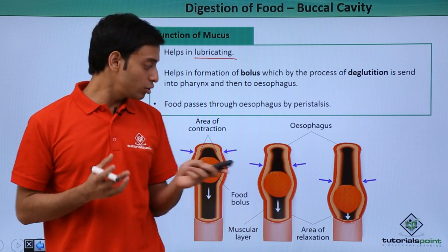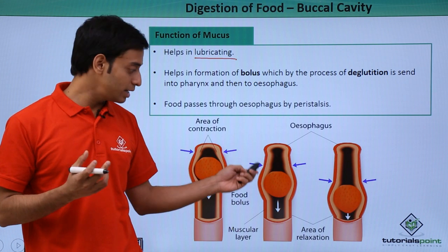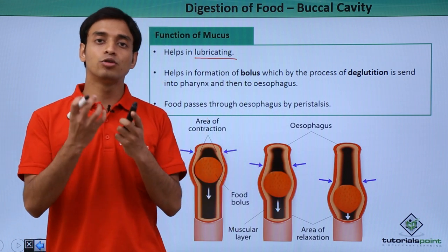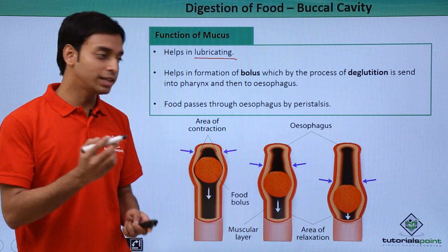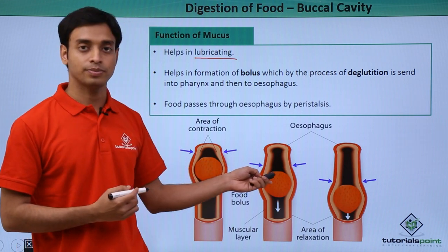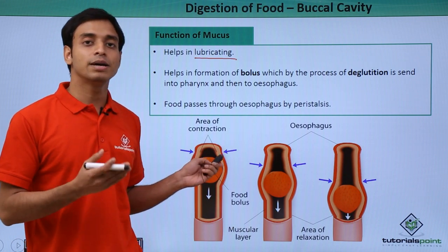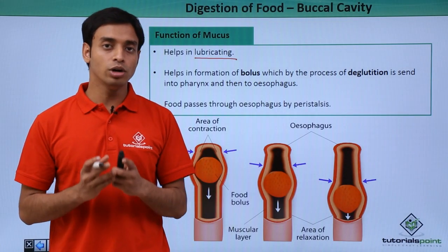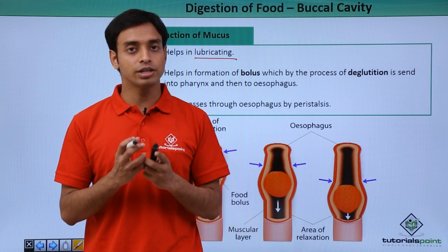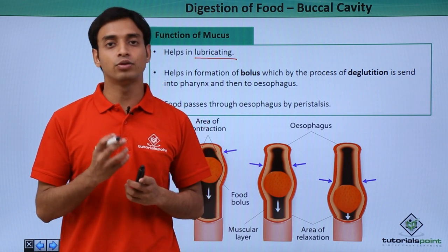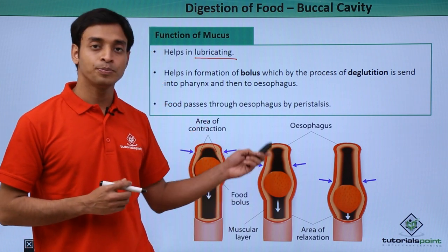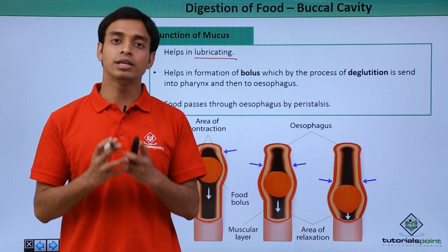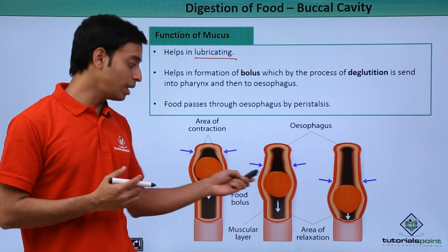What is bolus? Bolus is a round or circular structure — as you can see here, the food materials are made into a bolus. Because of the presence of mucus, the food particles become sticky and stick to each other, forming a round structure. This shape is easily passed into the intestine. Bolus is essentially a round structure of semi-digested or masticated food formed in the mouth.